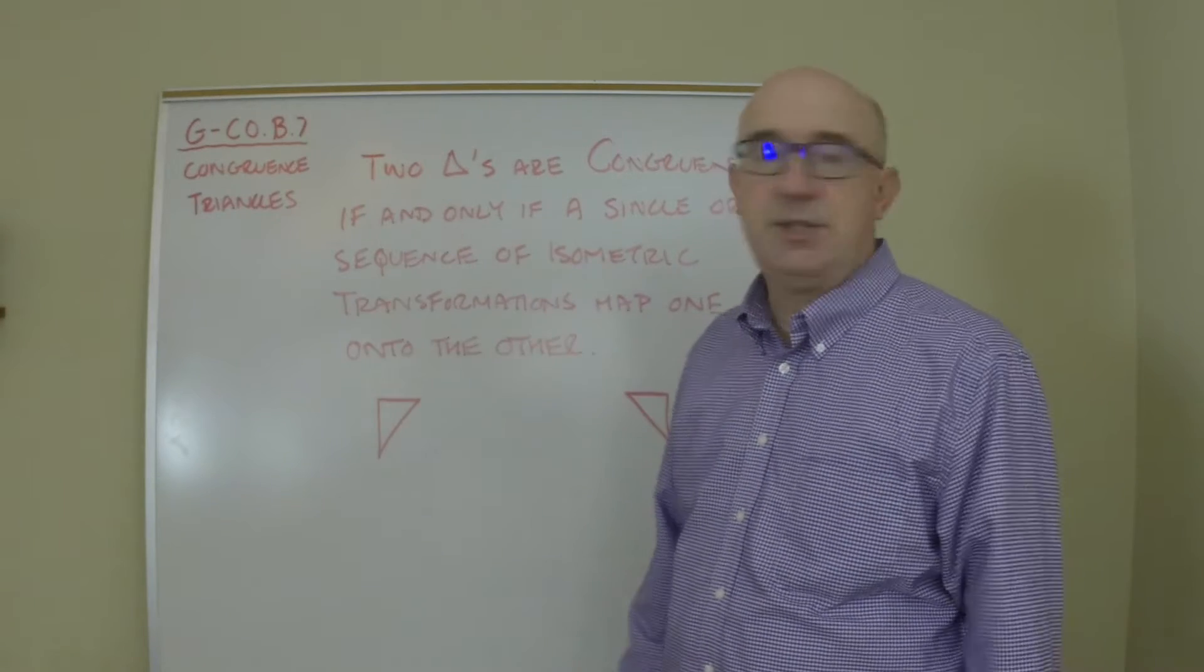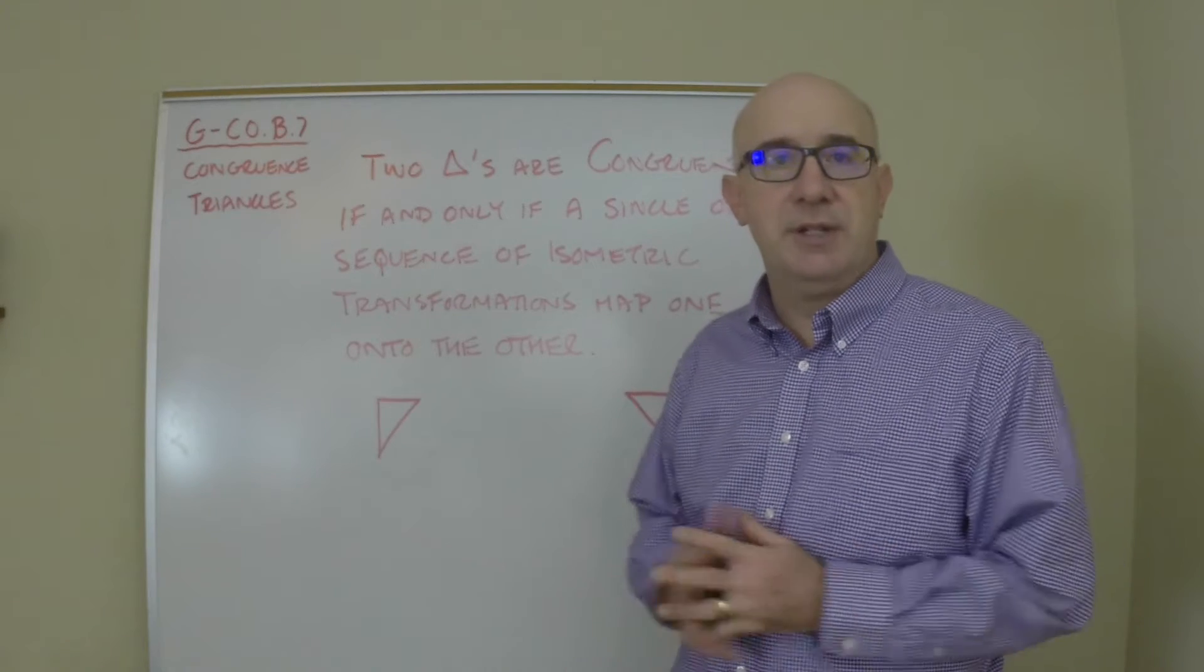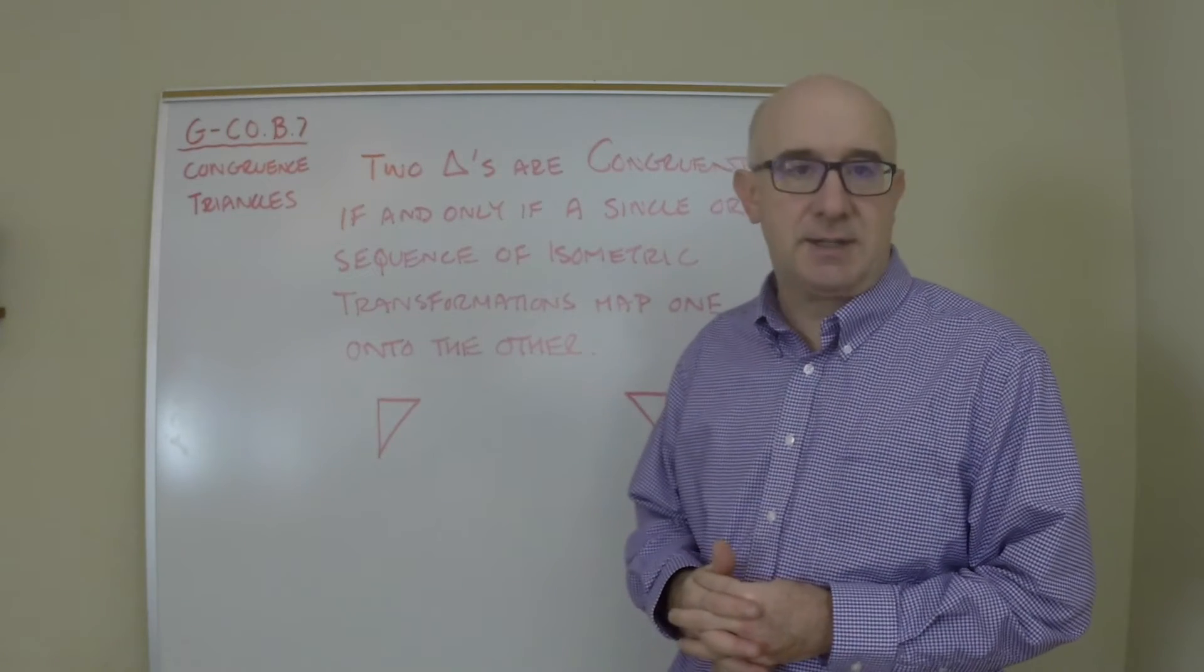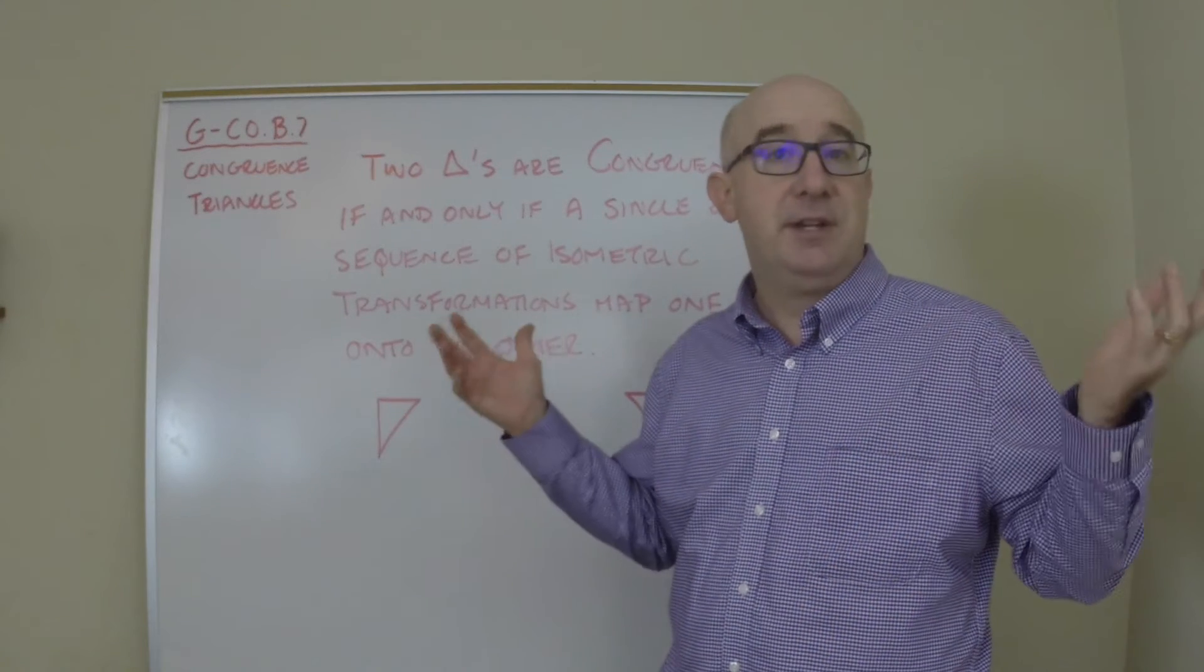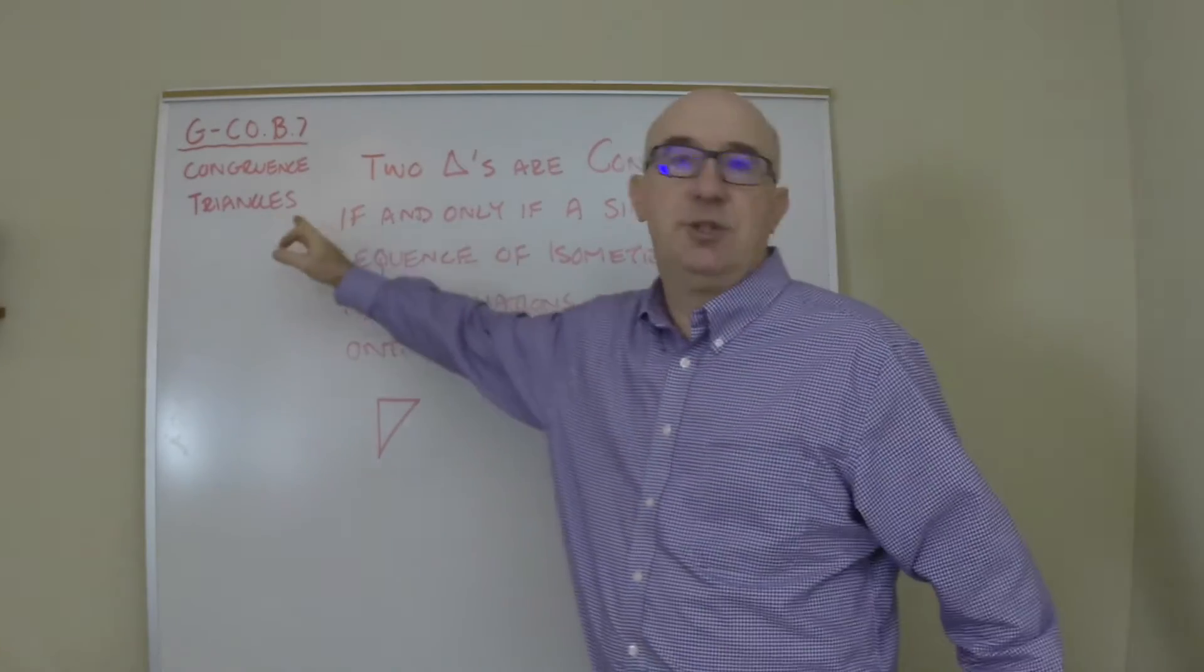Let's take a look at GCO B7 Worksheet 1. This is almost an identical objective to the previous objective B6, except in that case it's speaking about congruence of figures or shapes in general. This is specifically triangles.